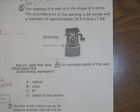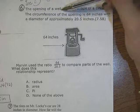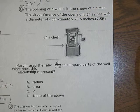Okay, number six says the opening of a well is in the shape of a circle. The circumference of the opening is 64 inches with a diameter of approximately 20.5 inches.